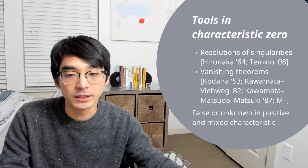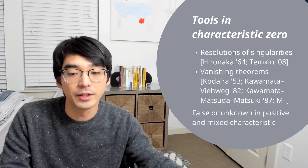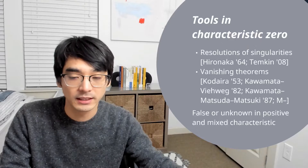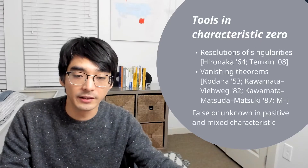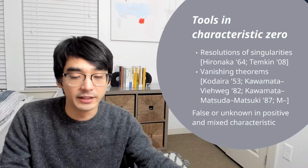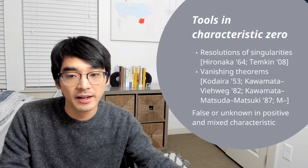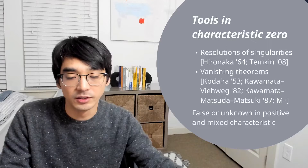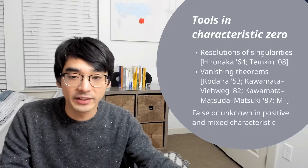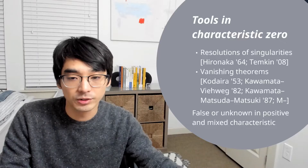The issue with these two very important ingredients is that they're actually false or unknown in positive and mixed characteristics. Resolutions of singularities are known only in dimension up to three — this is due to Lipman and Cossart-Piltant. And vanishing theorems are false — this is due to Raynaud and Totaro. So to work in arbitrary characteristics, you really need to find replacements for these two tools.